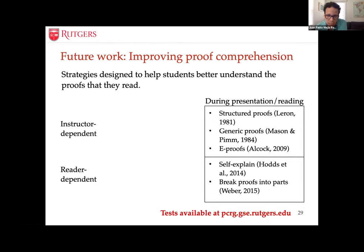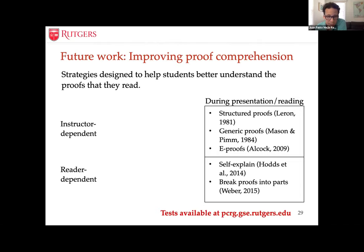I want to return to ways of improving proof comprehension. I've talked about instructor-dependent and reader-dependent strategies. On reader-dependent strategies, Keith Weber closely studied pairs of high-achieving math students to identify fruitful proof-reading strategies, later confirming in a survey of more than 80 participants that mathematicians who teach proof-based courses valued these strategies. One strategy was that students broke proofs into parts as they read — identifying what each part does. This hasn't been tested at large scale but is worth exploring.